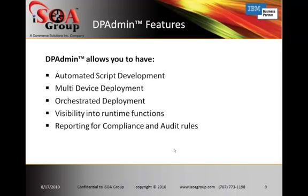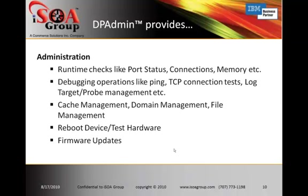Some of the DP Admin features: automated script development — this is going to help with your repeatability and also help with reducing your risk by making it simple to maintain and take care of these scripts. Multi-device deployment — you're going to be able to orchestrate your deployments so that you can take care of several things at once. It provides you visibility into runtime functions and reporting for compliance and audit roles. On the administration side, you can do runtime checks for port status, connections, and memory. You can do your debugging operations like ping and TCP connections. Cache management — you can flush your cache. Domain management, file management — you can make new files, remove files, set up new domains, reboot your device, and perform firmware updates.